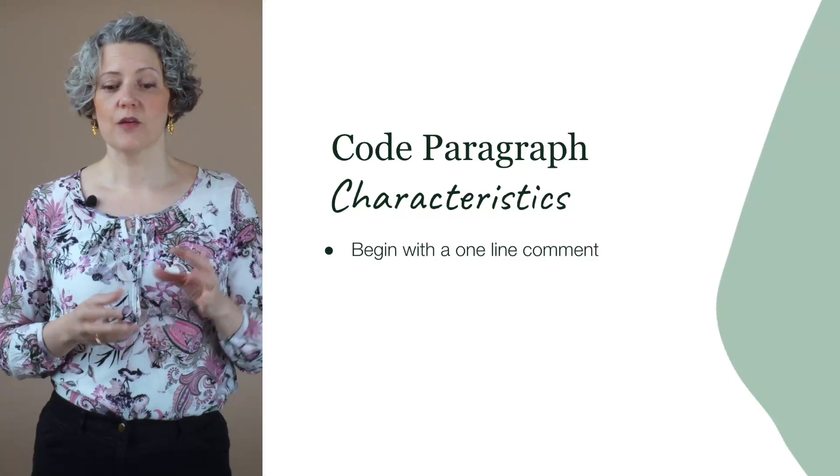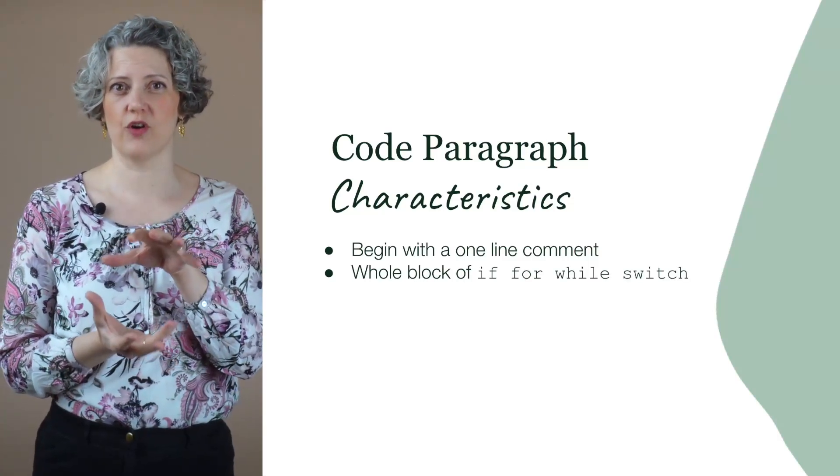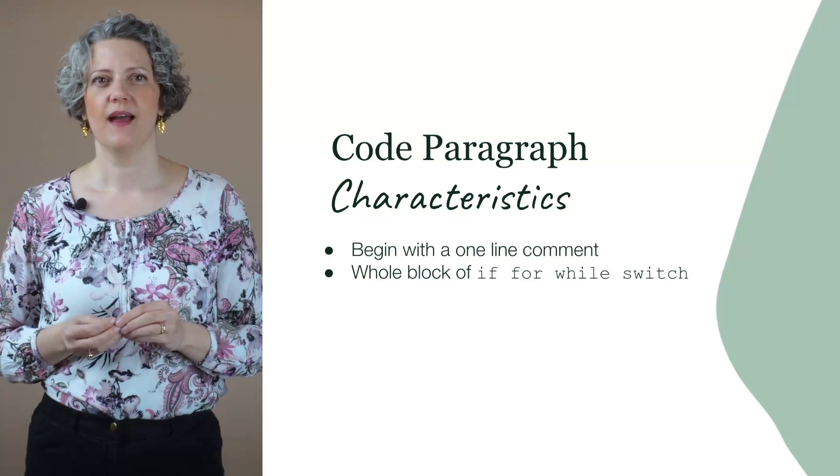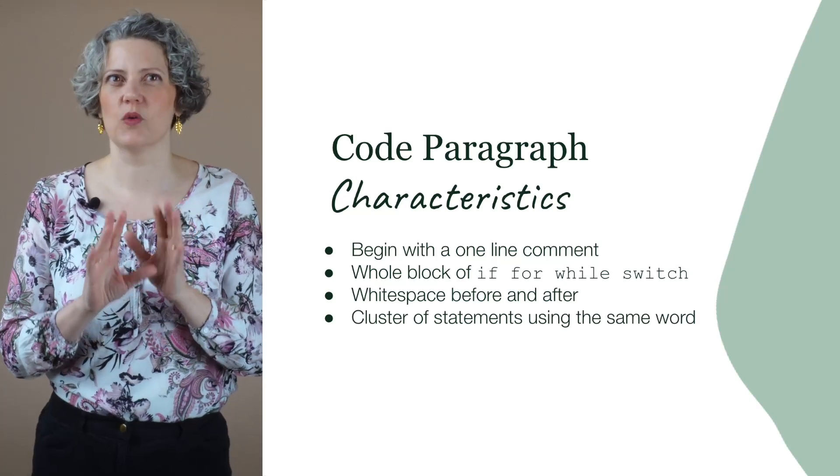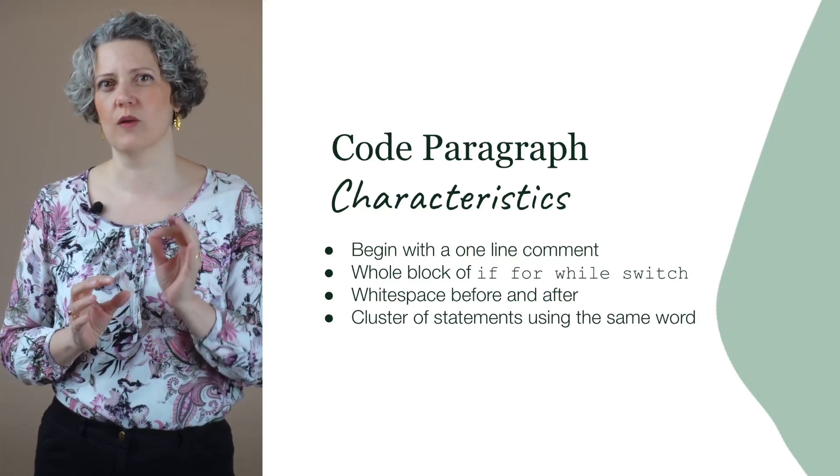A code paragraph will have some or all of the following characteristics: begin with a one-line comment; comprise the whole block of a for, if, try, switch, or while statement; have a line of white space before and after; contain a cluster of statements that all use the same variable name or a recurring word. All of these are visual cues that will prompt you to investigate. If this really is a code paragraph, it will be possible to extract it as a method or function with sensible parameters and a good return type. You should be able to replace that section of detailed implementation with a method name that explains the intention of that code.